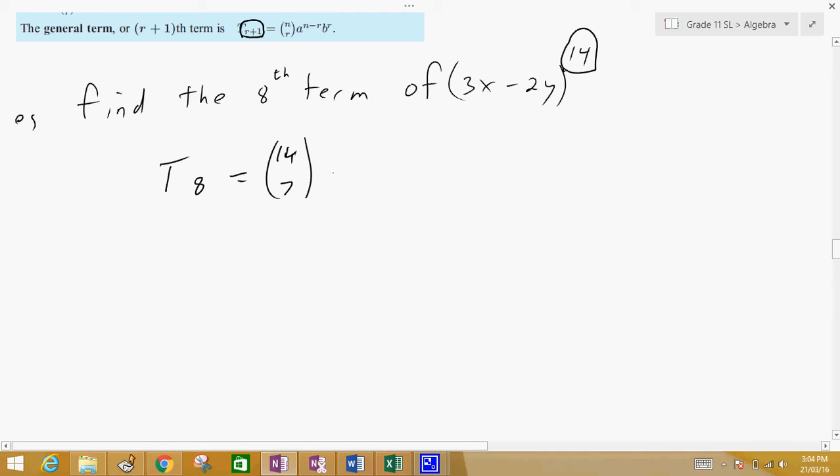A, a is your first one, which is your first term in the binomial, which is 3x, to the power of n minus r, so 14 minus 7.